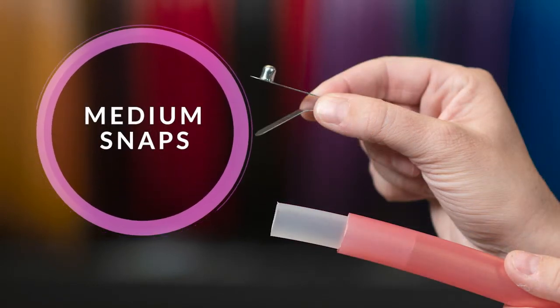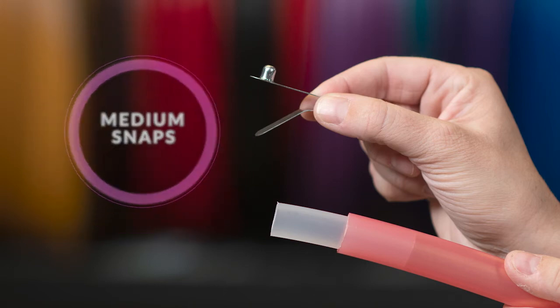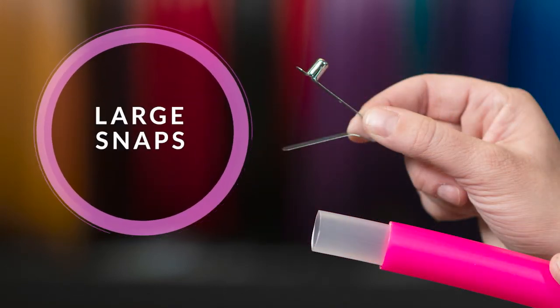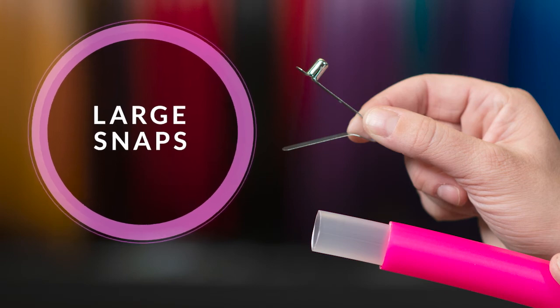Medium snaps are used for 3/4 inch hoops using 5/8 inch insert material. Large snaps are used for 7/8 inch and larger PE hoops using 3/4 inch insert material and larger.